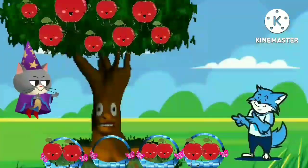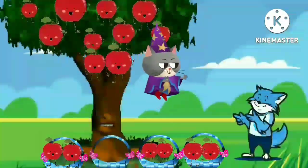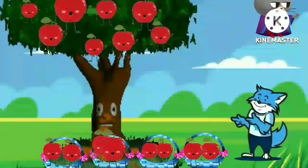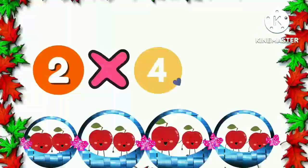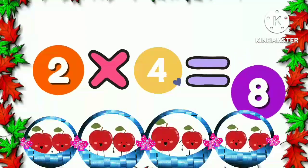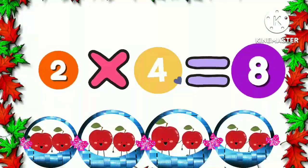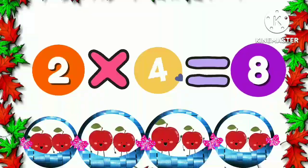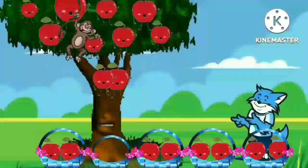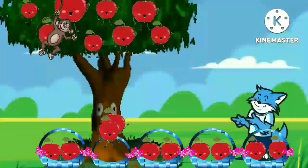The magical cat came again and cut off two more apples. The apples fell into the fourth basket. Now we have two apples in each four baskets. Two four times is eight. And now a monkey came from somewhere and cut off two apples.